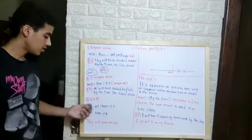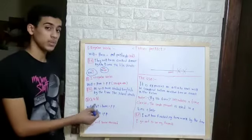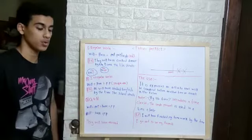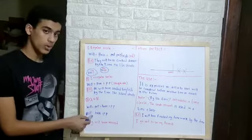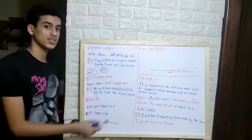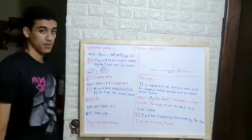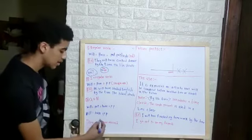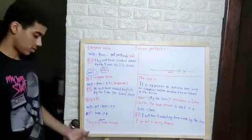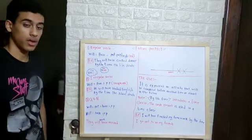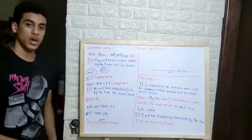And the last thing in the formation, the question and the negative. For the negative, will plus not plus have plus the past participle. And the question we will have will plus have plus the past participle. Let's have an example of these two points. They will have arrived. In the negative, we will say they will not have arrived. And in the question, we will say will they have arrived?